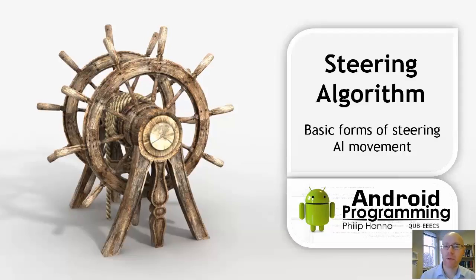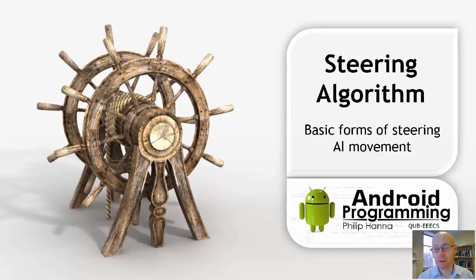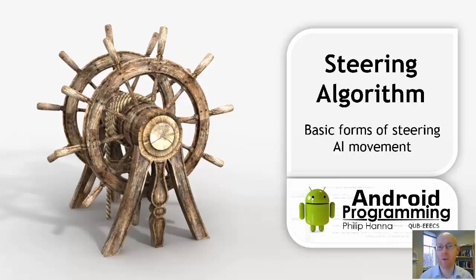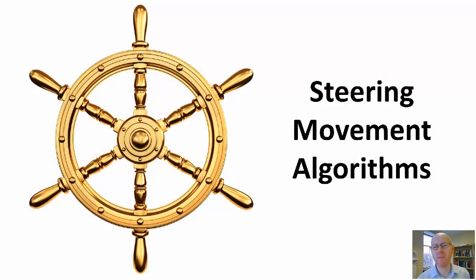In this lecture we're going to carry on looking at AI forms of movement. We're going to explore what's known as steering algorithms, which output an accelerative force that we'll use to update our velocity and update our position. These algorithms are quite flexible — they offer almost a toolkit of different types of behavior that can be combined together to produce sophisticated forms of movement.